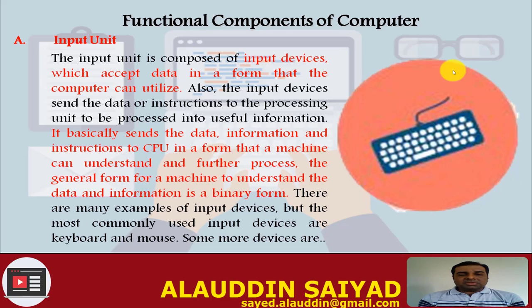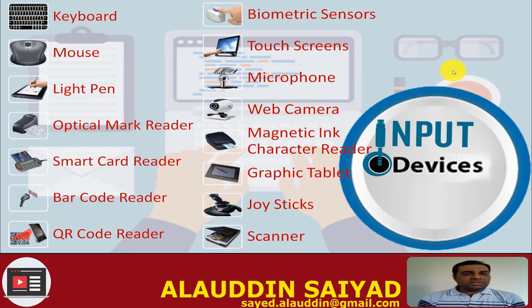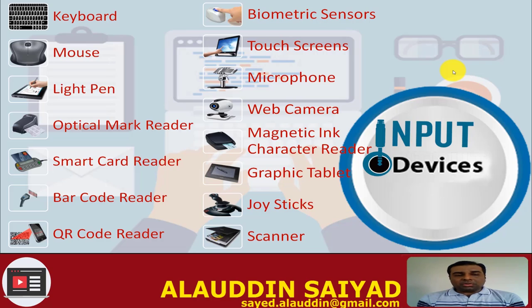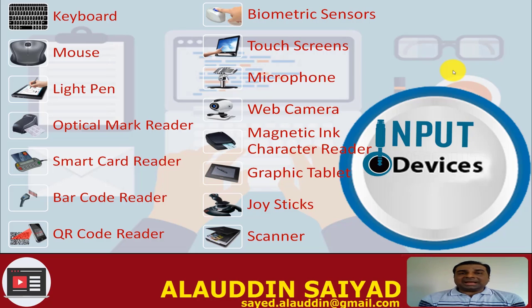There are many examples of input devices, but the most commonly used are keyboard and mouse. Here is a list of input devices: Keyboard, Mouse, Light Pen, Optical Mark Reader, Smart Card Reader, Barcode Reader, QR Code Reader, Biometric Sensors, Touch Screens, Microphone, Web Camera, Magnetic Ink Character Reader, Graphic Tablet, Joysticks, and Scanner.